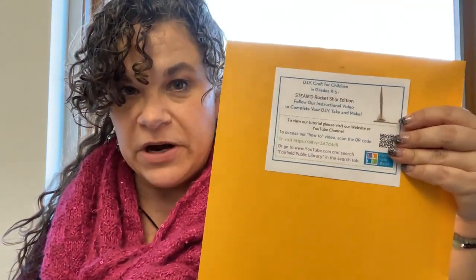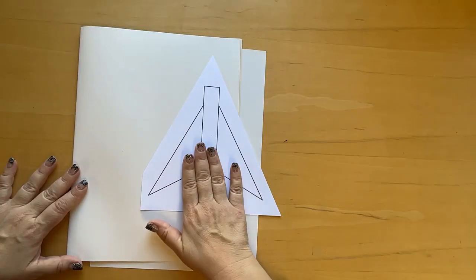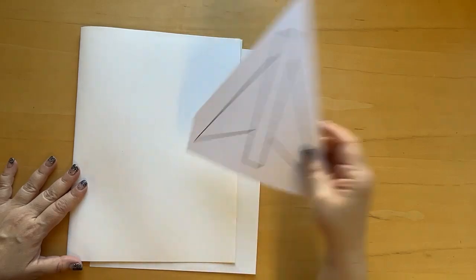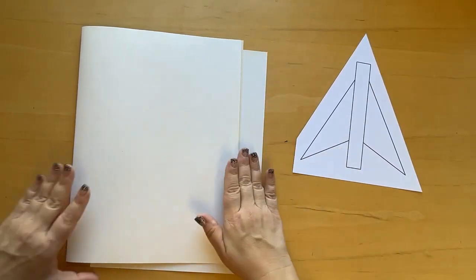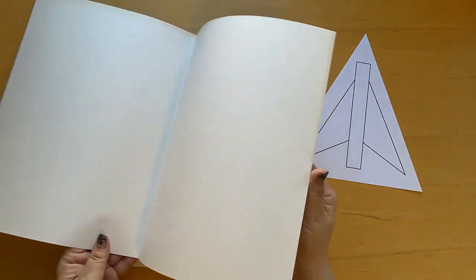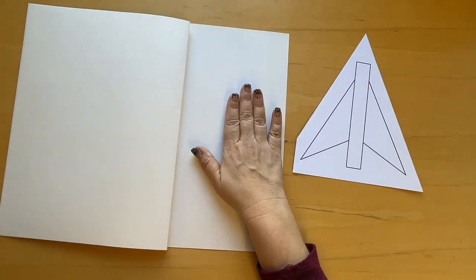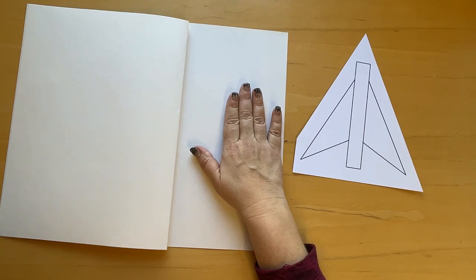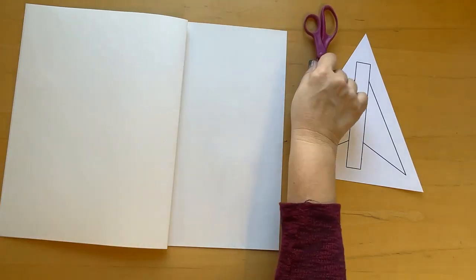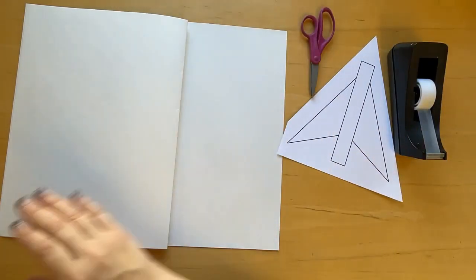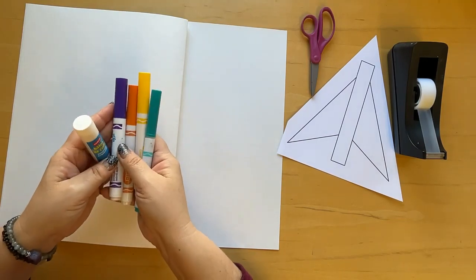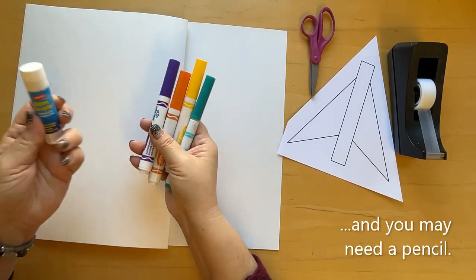In your kit that you picked up from the library you'll find a fins template for your rocket if you choose to use that, two large pieces of paper that are folded and one piece of 9x12 paper. You'll also need scissors, tape, and optional items are markers and a glue stick.